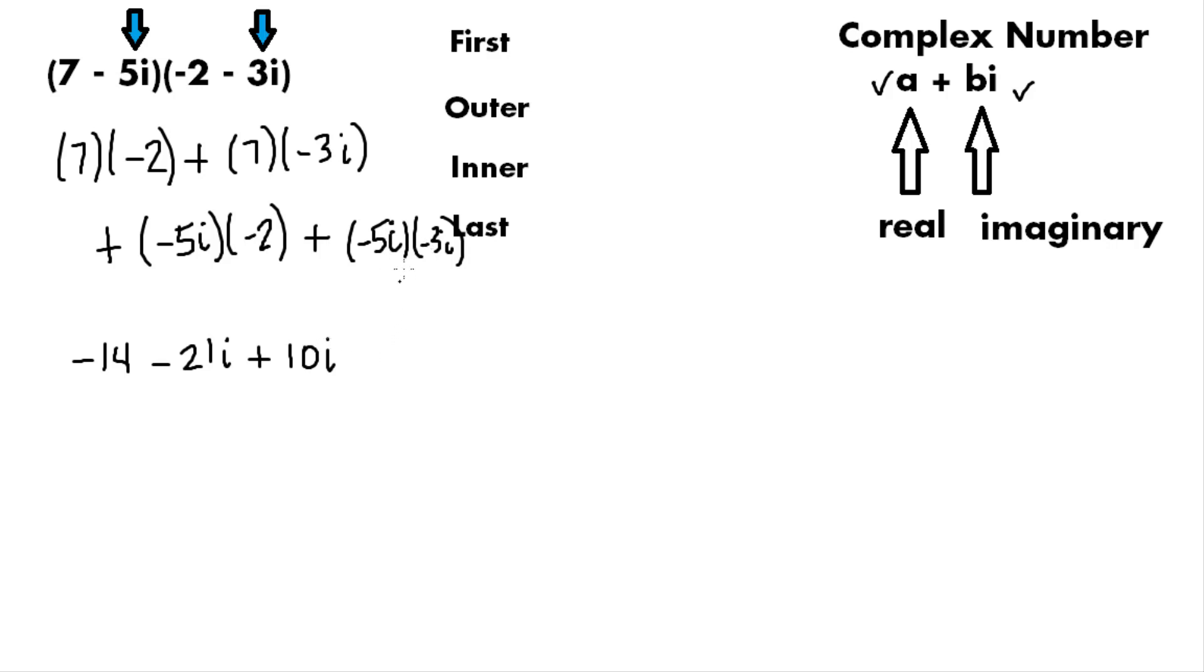And then our last step, this is where the tricky part comes in. We have negative 5 times negative 3 and that's plus 15. And now we have i times i and that's i squared.